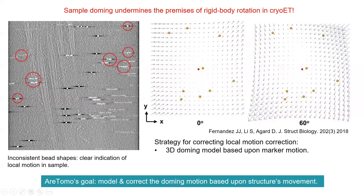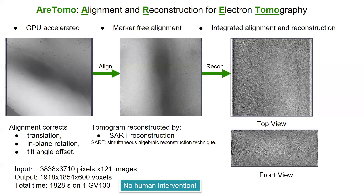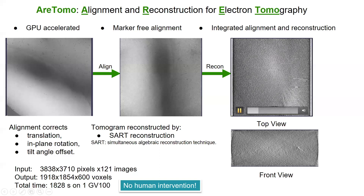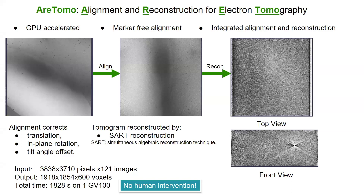Here is the top view (XY) and front view (XZ) of the reconstructed volume. For an input tilt series containing 121 tilt images acquired on a K2 camera, to reconstruct a roughly 2K × 2K × 600 voxel volume, it takes a little bit more than 30 minutes on a single GV100 card.